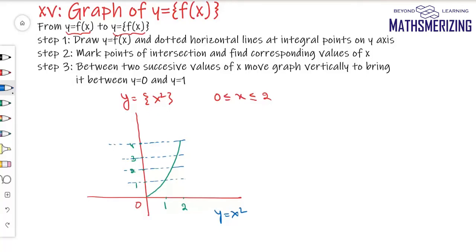I'll mark the corresponding points on x. At y = 1, x = 1. When y = 2, x = √2. Then x = √3, and at x = 2, y = 4.